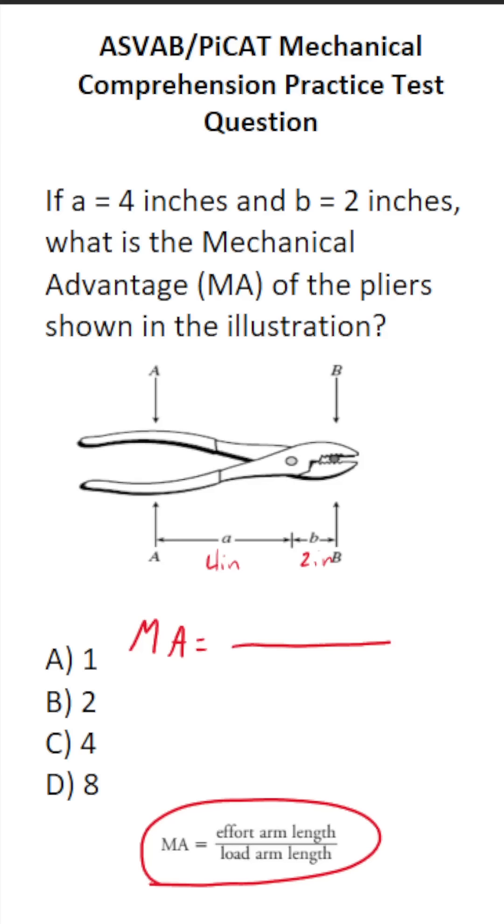And let's talk about that for a minute. Where A and B meet right here is called the fulcrum. And not surprisingly, where you squeeze these pliers is where you're going to be applying your effort. So what is the effort arm length? It's the distance from here to our fulcrum. And you can see that that is 4 inches.